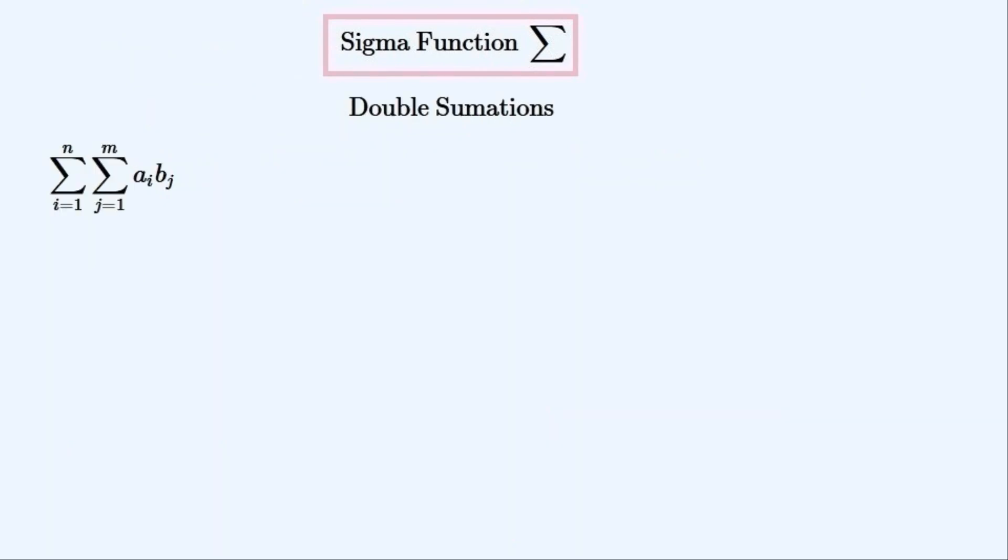We can have two sigma symbols together so that we can sum over two variables. In this case i and j. This is a double summation. They come in useful especially in matrix algebra and with polynomials.